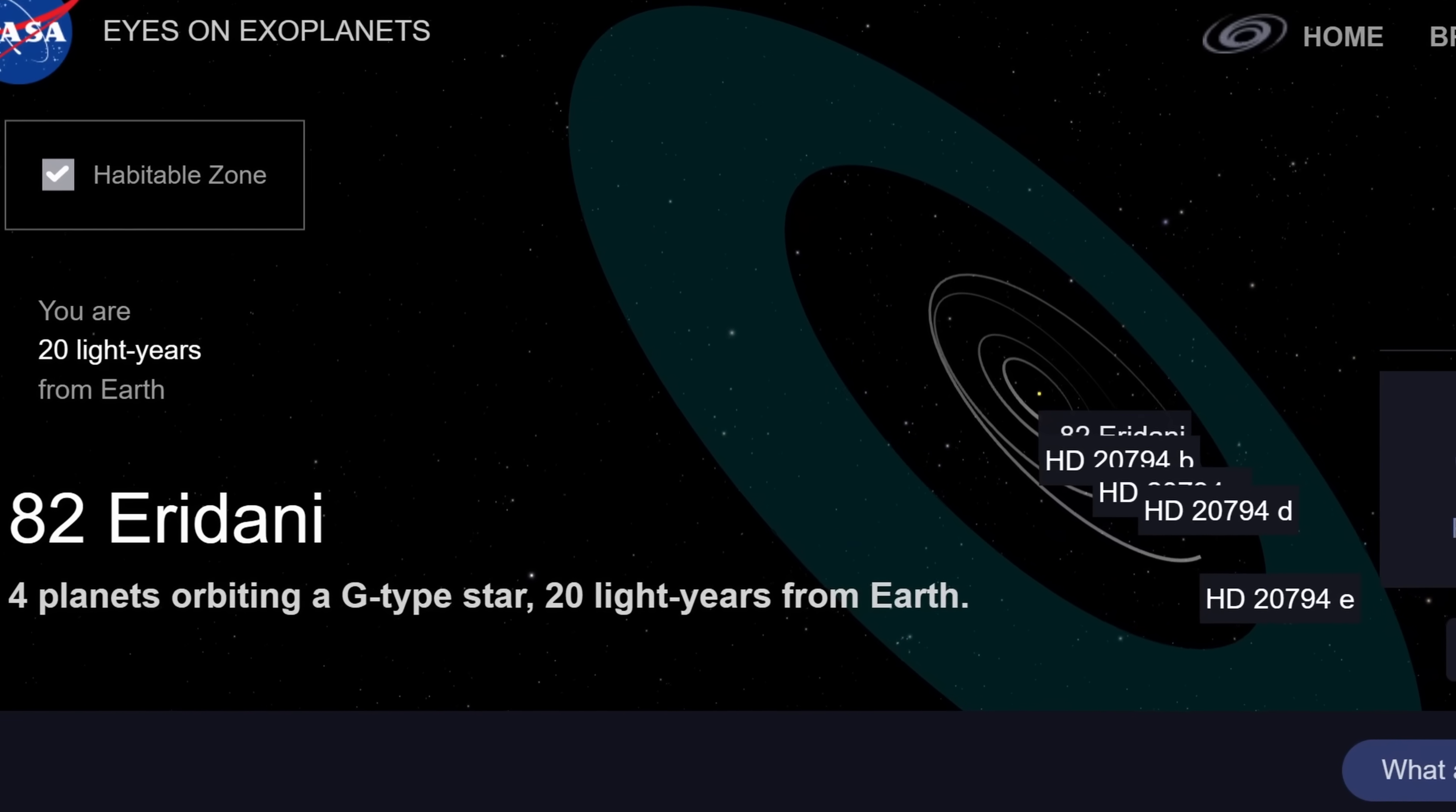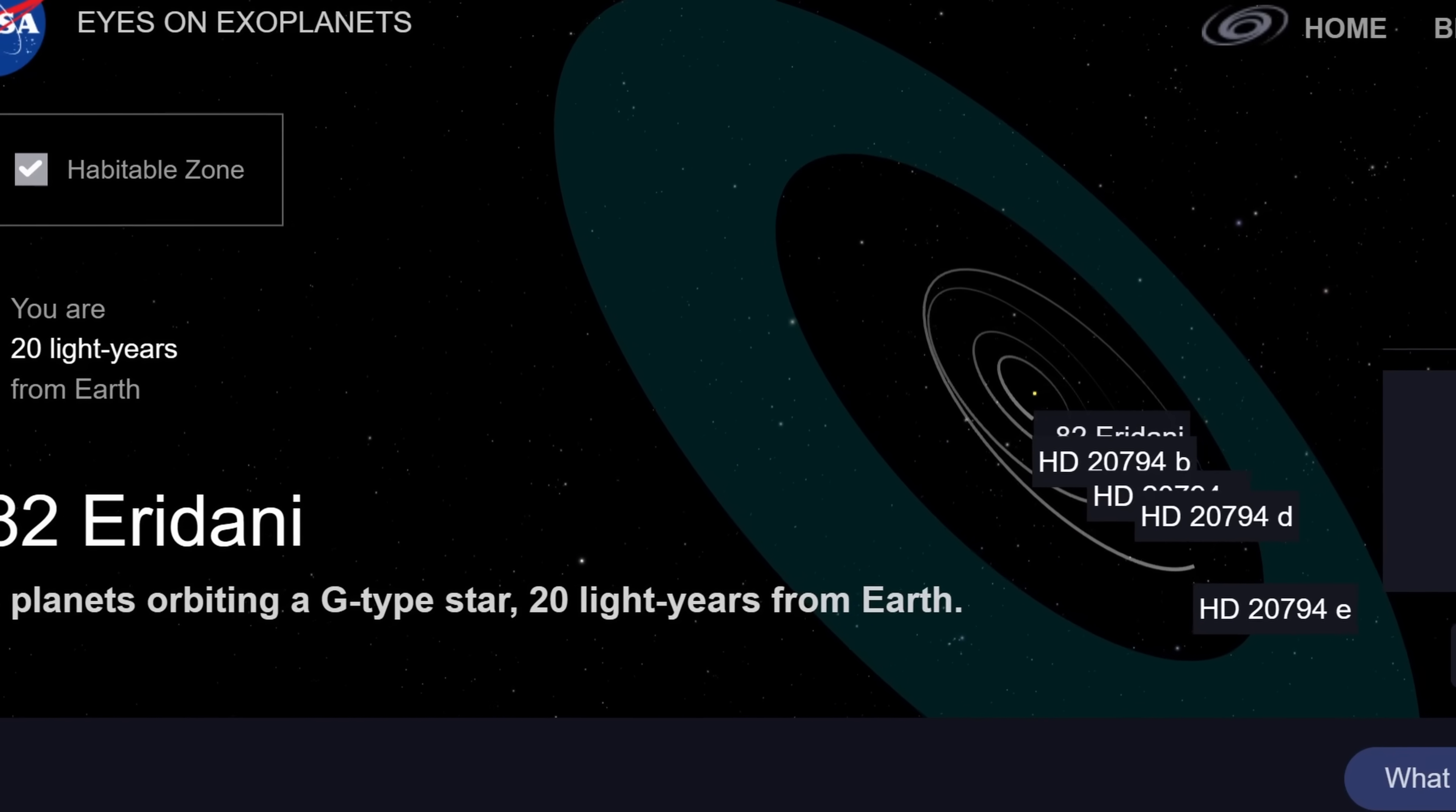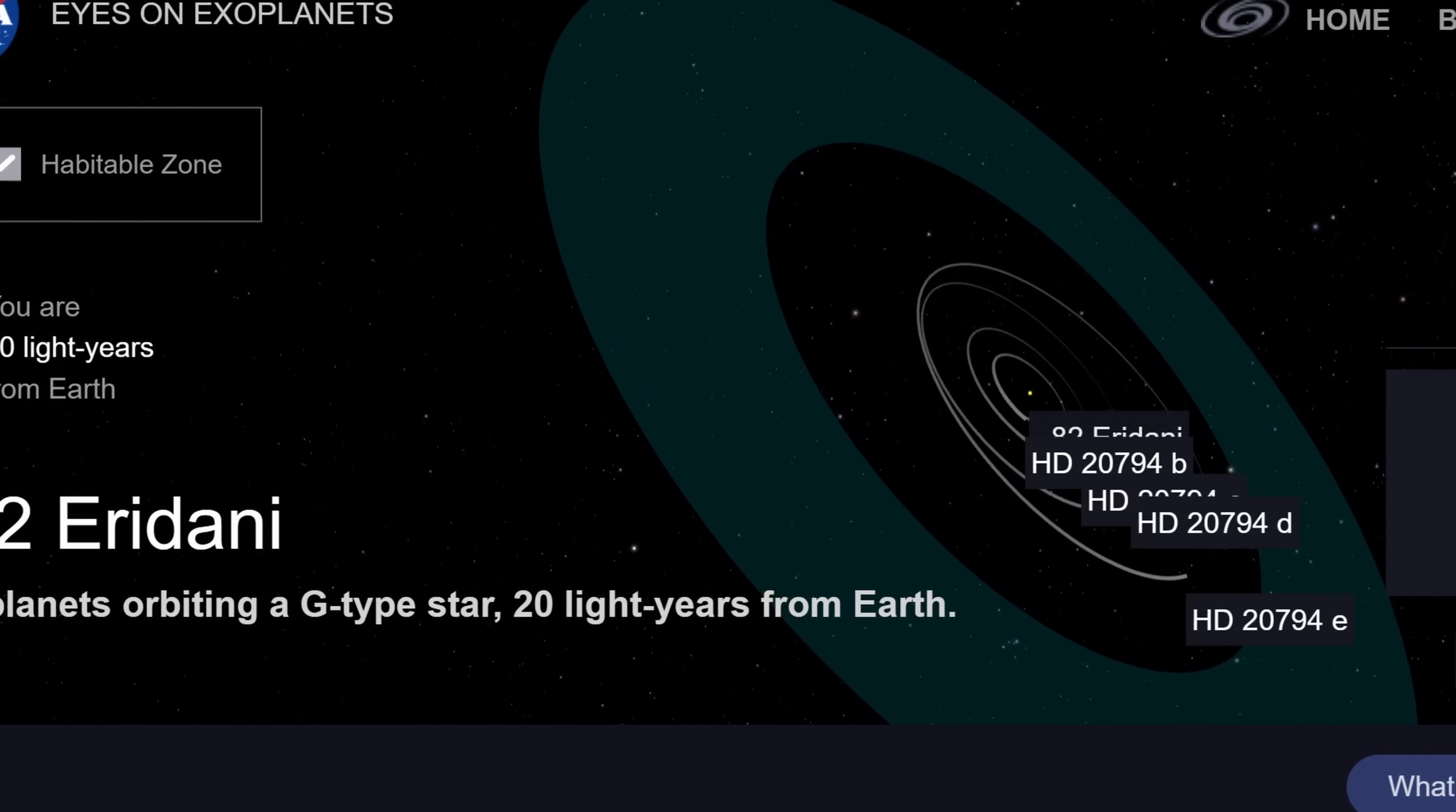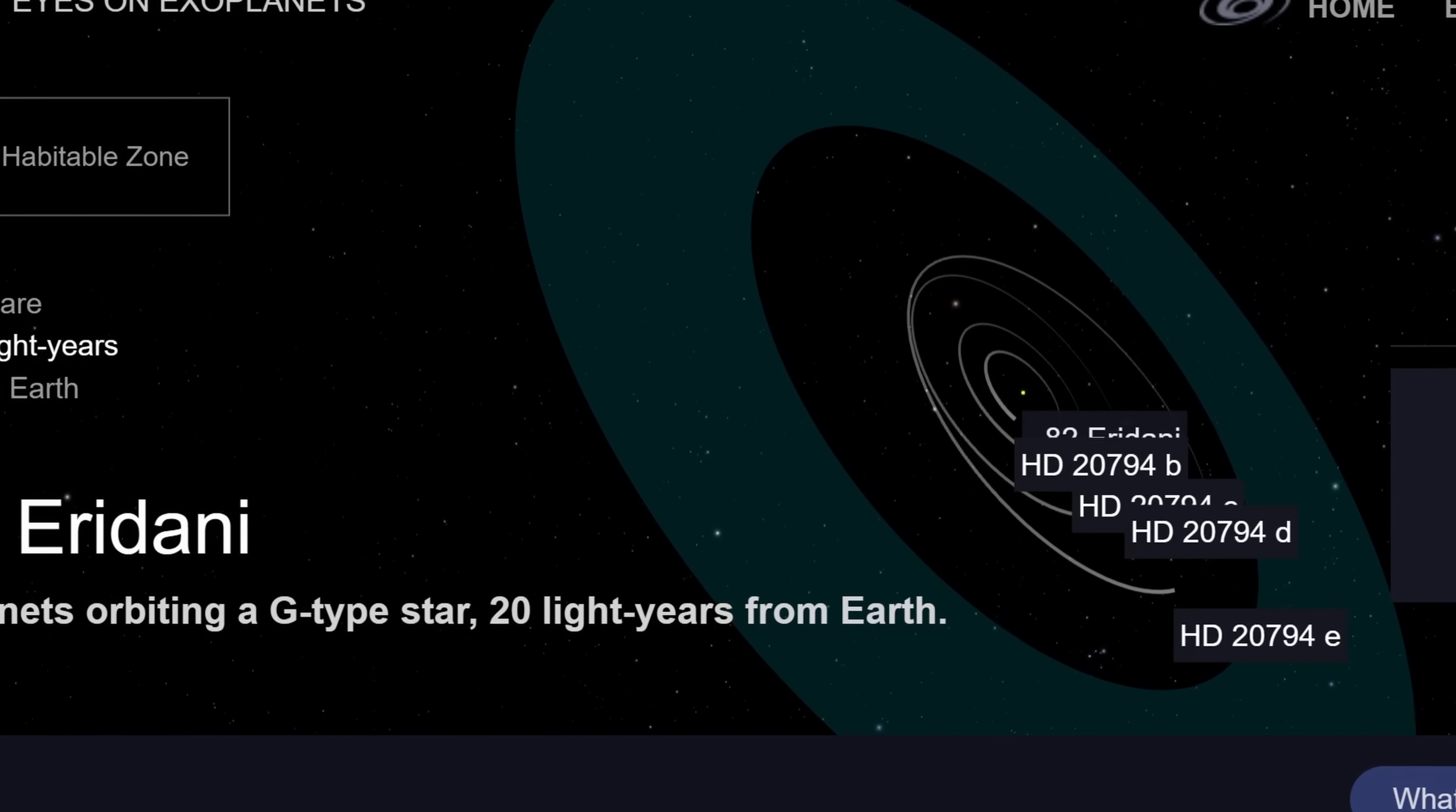Now even today it's not actually clear how many planets there are, but possibly four, although only three have been officially confirmed. And this as you can see is only 20 light years away from us.